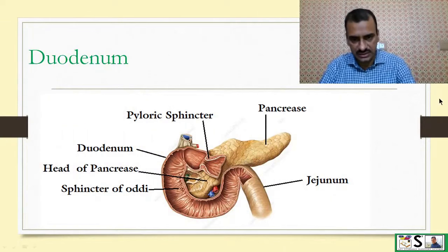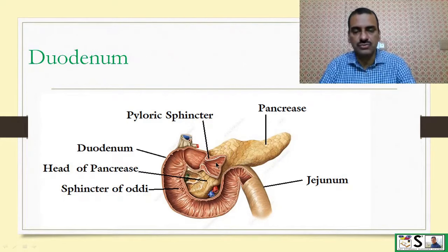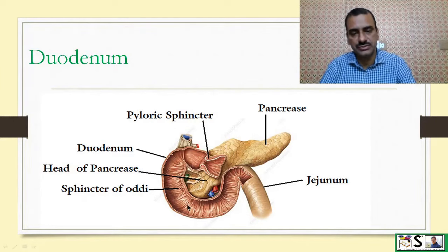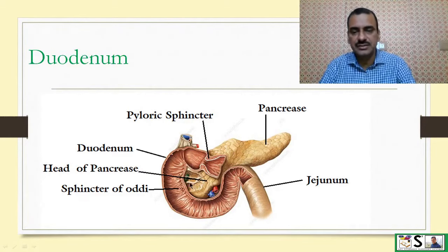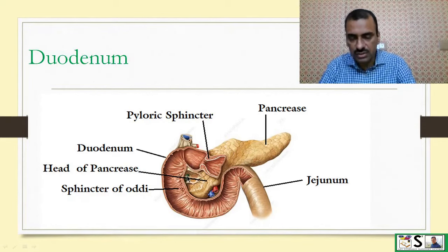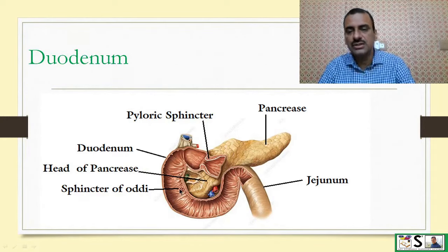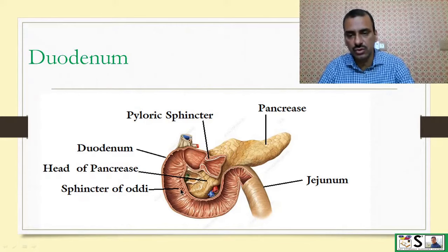Here you can see this is the pyloric sphincter — this is part of the stomach and here the duodenum starts. It is curved, only 25 centimeters, and it curves around the head of the pancreas. This is the pancreas gland, and this is the duct coming from the gallbladder and this from the pancreas; they commonly enter into the duodenum, and this is guarded by the sphincter of Oddi.